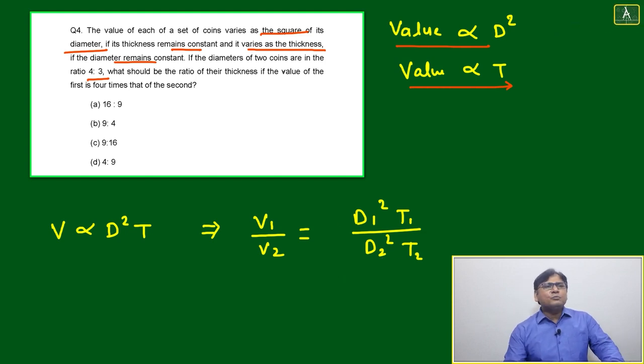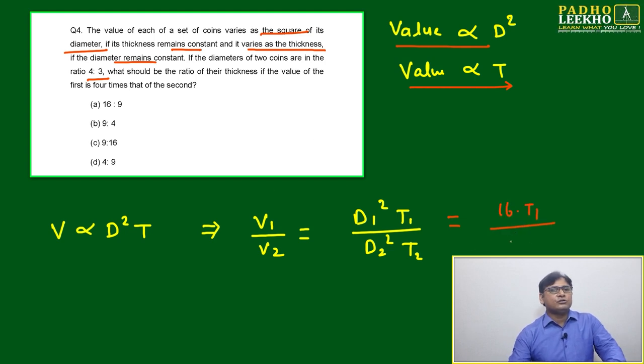We have to put 4:3 ratio. We make it a square, it will be 16:9. So it becomes 16 T₁ divided by 9 T₂.